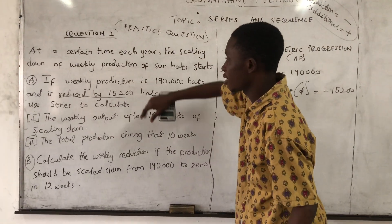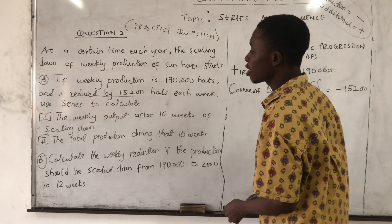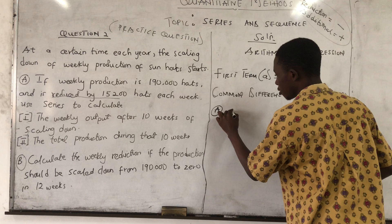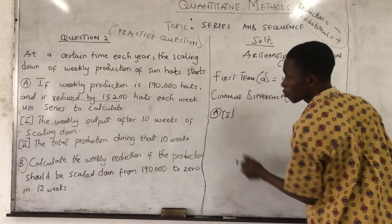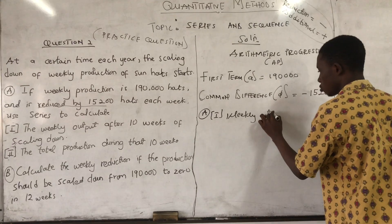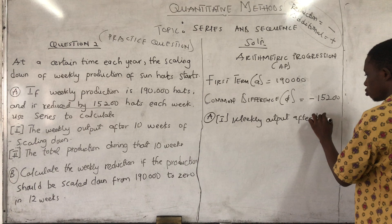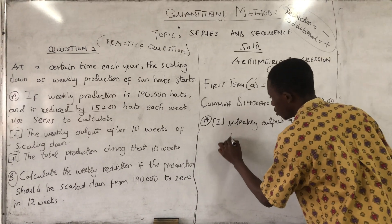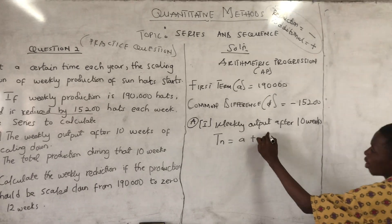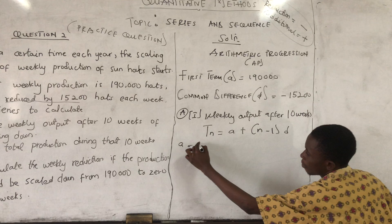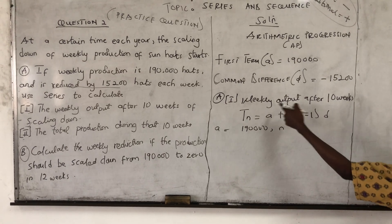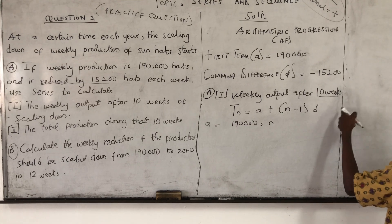So we are done with the given information. Now, calculate the weekly output after 10 weeks. So question A(i): we use the normal output formula Tn = A + (N − 1)D, where the first term A is 190,000. The Nth term given in the question is 10 weeks, so N is 10.